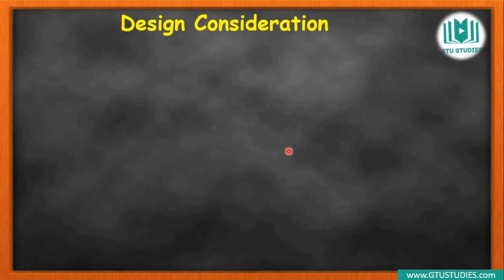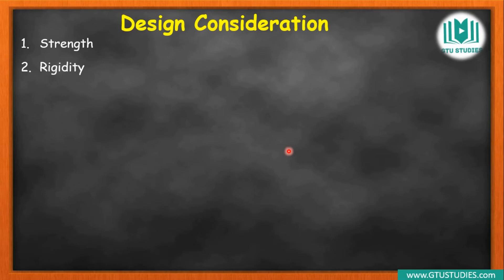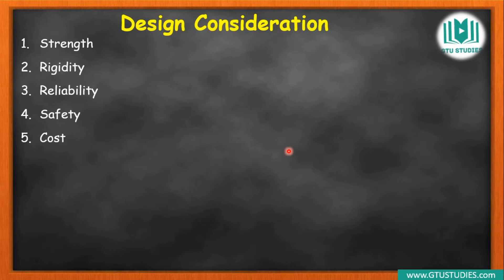Now, what are the factors and benefits we need to consider? First, strength — the design must maintain sufficient strength so manufacturing can be done properly. How rigid should the product be, so it can be cut with the appropriate cutter or tool? Reliability — in how many atmospheres and working conditions can it be used? Safety and cost, and what should the weight be?